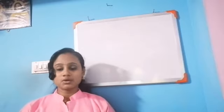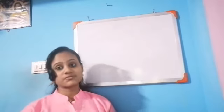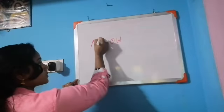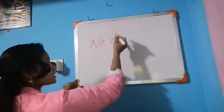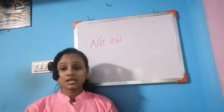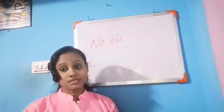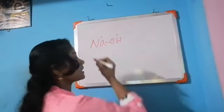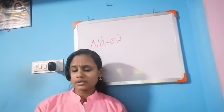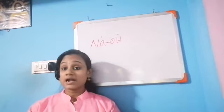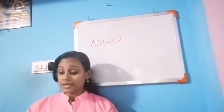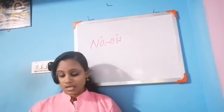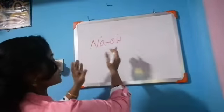After bond breaking, rearrangement will be done and new substances are formed. For example, sodium hydroxide — NaOH — here sodium is positively charged and OH is negatively charged. There is a chemical bond between them. So what is a chemical bond? A chemical bond is the attractive force that holds the atoms of the molecule together.